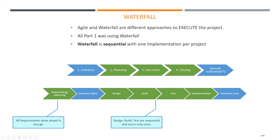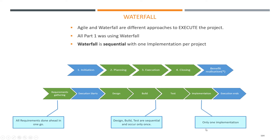If they want something different, if they want a change, we just invoke the change control process. We say: sorry, you need to go through the change request process and it needs to be signed off before we even have a closer look at it. So we do all of that once, and then we implement once.